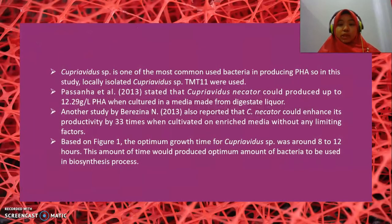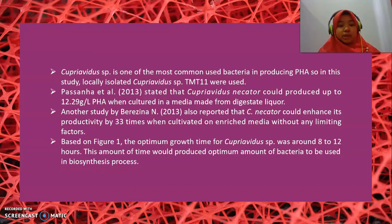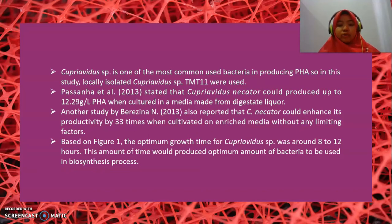In the discussion, Cupriavidus species is one of the most commonly used bacteria in producing PHA. In this study, locally isolated Cupriavidus species TMT11 was used. Prasana et al. 2013 stated that Cupriavidus necator could produce up to 12.229 gram per litre PHA when cultured in a medium made from digested liquor. Another study by Barizina N. 2013 also reported that Cupriavidus necator could enhance its productivity by 33 times when cultivated on enriched media without any limiting factors. Based on figure 1, the optimum growth time for Cupriavidus species was around 8 to 12 hours, which would produce an optimum amount of bacteria for the biosynthesis process.